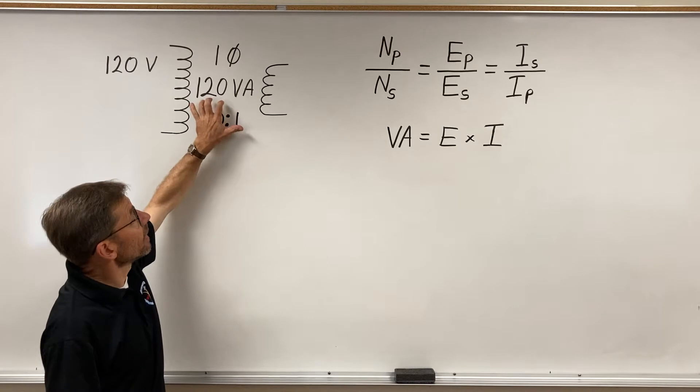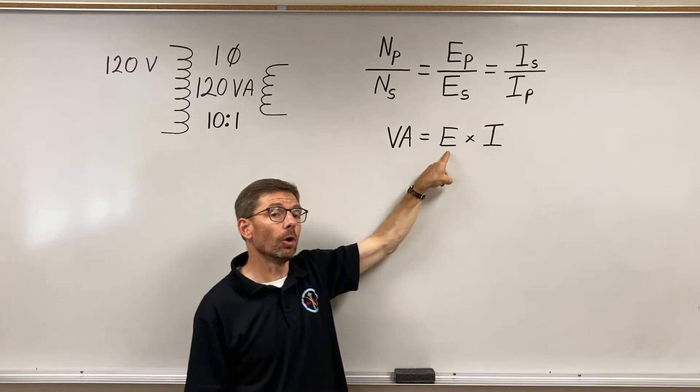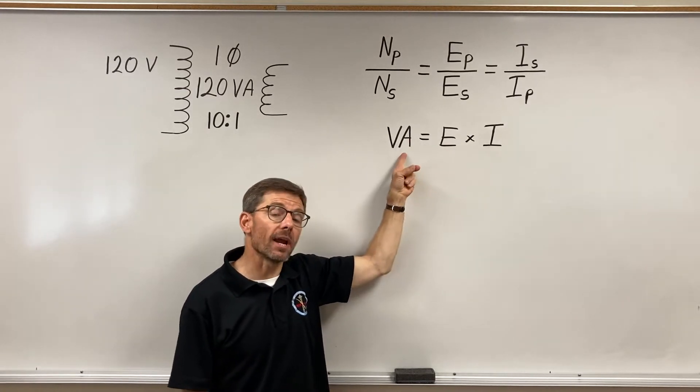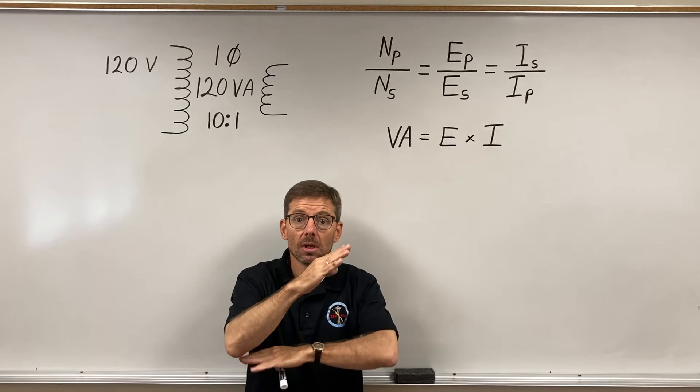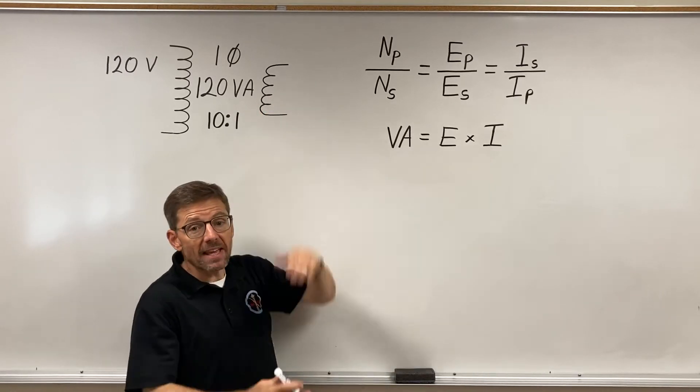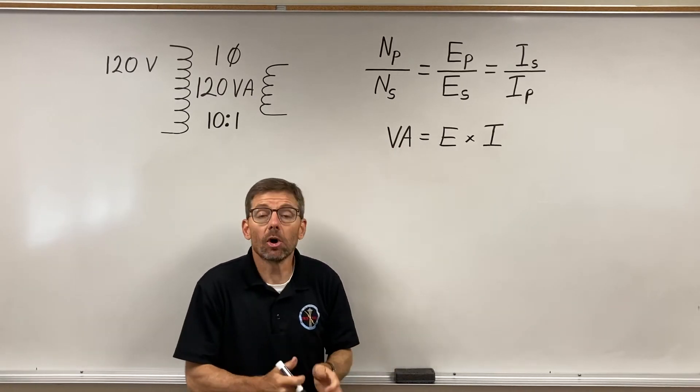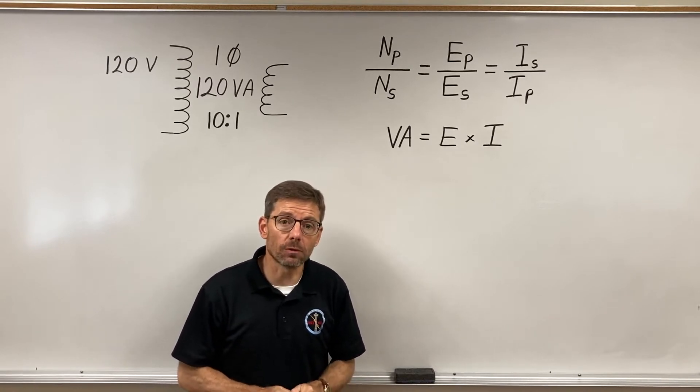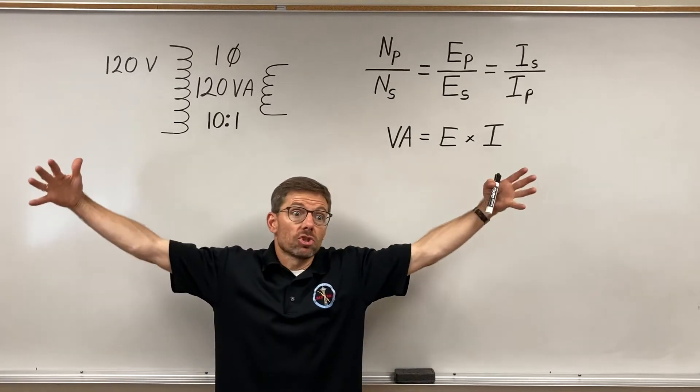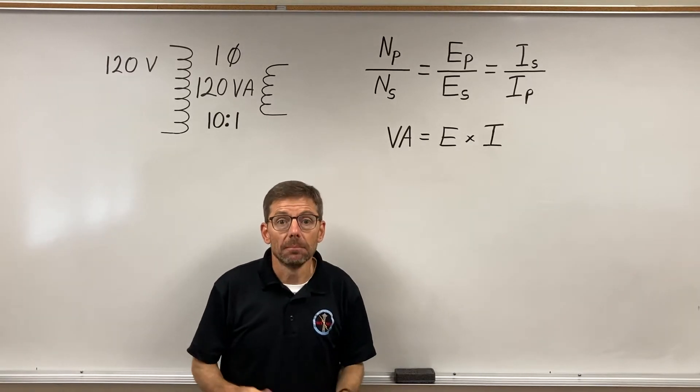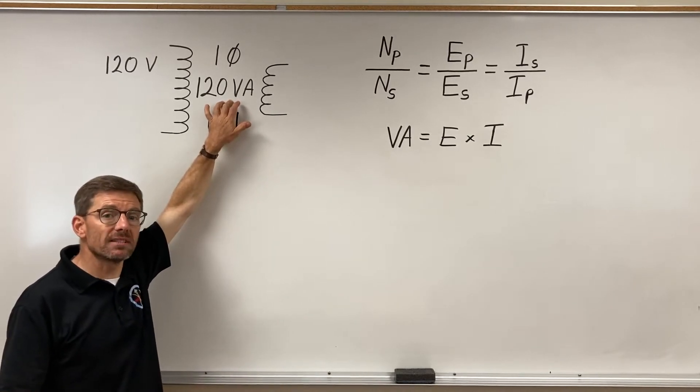So, this transformer is rated at 120 volt amps. Volt amps, remember, are a form of power, which is made up of volts times amps. And if you remember your AC theory, volt amps is the total circuit power. In our power triangle, it was the hypotenuse. Because regardless of the phase angle or power factor of the loads, the transformer has to provide for the entire circuit. And we call that volt amps. So, that's what we rate transformers in. Bigger transformers are kilo volt amps, thousands of volt amps. Or huge substation transformers are mega volt amps, millions of volt amps. But this is just a little guy, 120 volt amps.